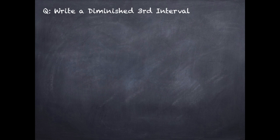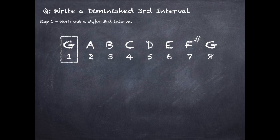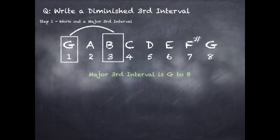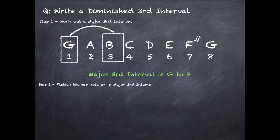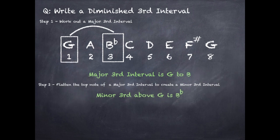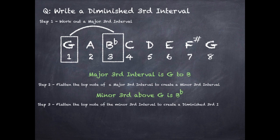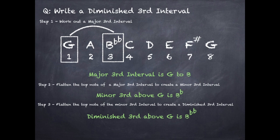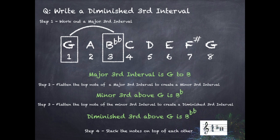To write a diminished third interval, step 1: work out a major third interval. With G, we go from the first note of the G major scale to the third note, which is B — a major third interval is G to B. Step 2: convert this to a minor third interval by flattening the top note, so B becomes B flat — minor third is G to B flat. Step 3: flatten the top note of the minor third to create the diminished third — B flat becomes B double flat. Diminished third is G to B double flat. Step 4: stack the notes on the stave.